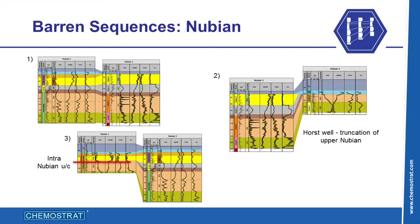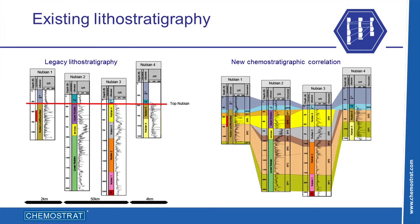Chemostratigraphy is widely used on barren sequences such as the Nubian. Here, geochemical profiles highlight subtle variations in the mineralogy that are often undetected by other techniques. Chemostrat uses these characteristics to subdivide the succession into correlative sequences, packages and units. Chemostratigraphy has identified new stratigraphic relationships such as the truncation of the upper Nubian and the detection of intra-Nubian unconformities. As a result, the legacy lithostratigraphic models of the Nubian have been refined into a new scheme to improve reservoir development.